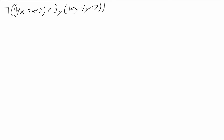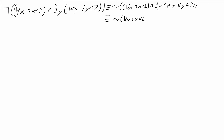We push that first negation in, giving us not for all x, not x less than 2, or not exists y, 1 is less than y or y is less than 7. Notice, the and flipped to an or when we did that.